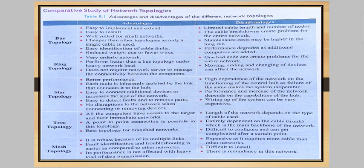Next is tree or mesh topology. All computers have access to the large entire network. A point-to-point connection is possible in this topology, which is best for branched networks. The length of the network depends on the type of cable used. Disadvantage: it entirely depends on the cable, which is the main backbone of the network, and it is difficult to configure and can become complicated after a certain point.